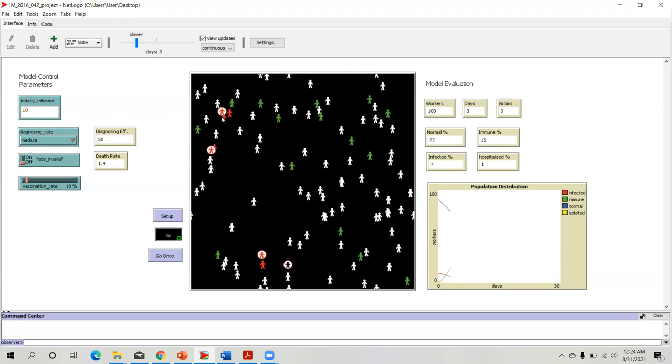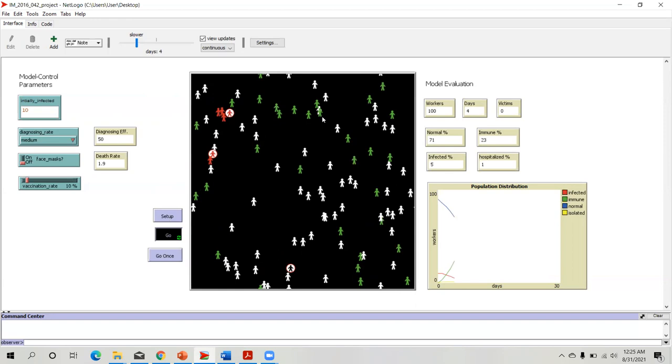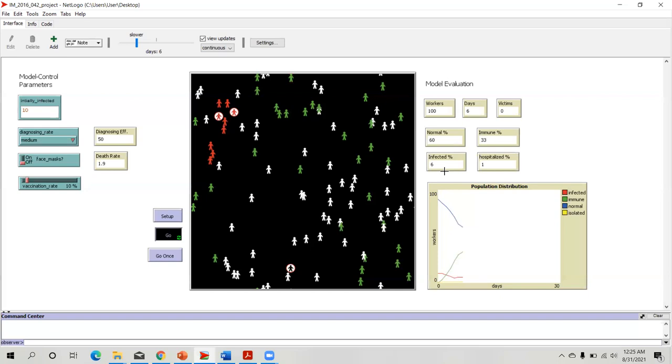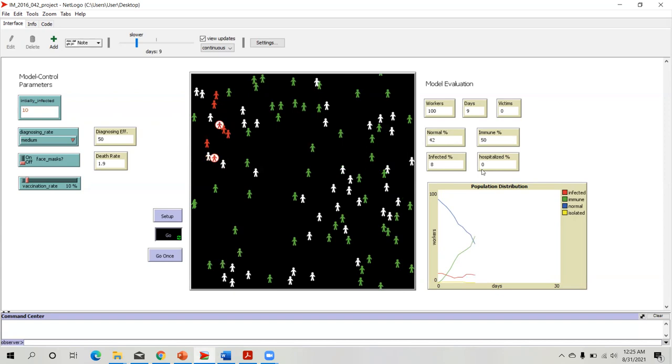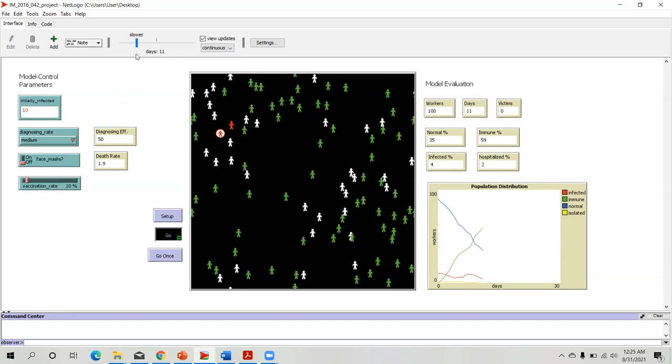Some of them in the meantime are getting vaccinated then becoming immune, which are demonstrated by green. You can see in the evaluation parameters, infected percentage is shown, and then hospitalized percentage is also mentioned eventually, because being hospitalized is one of the options for an infected worker.